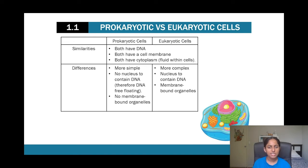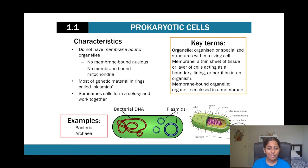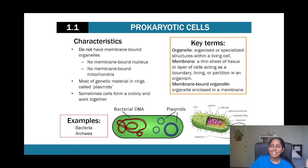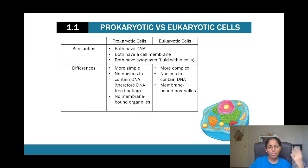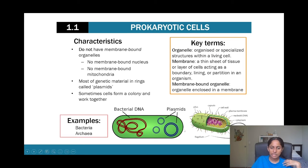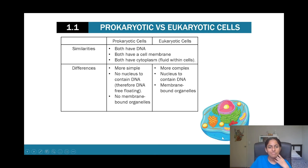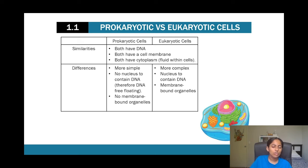This table summarizes the similarities and differences between eukaryotic and prokaryotic cells. Both have DNA and both have a cell membrane — even though prokaryotic cells have no membrane-bound organelles, they still have a cell membrane. Both also have cytoplasm, which is the liquid in which organelles float. The differences are that prokaryotic cells tend to be simpler, they have a nucleoid rather than a nucleus, and they lack membrane-bound organelles.